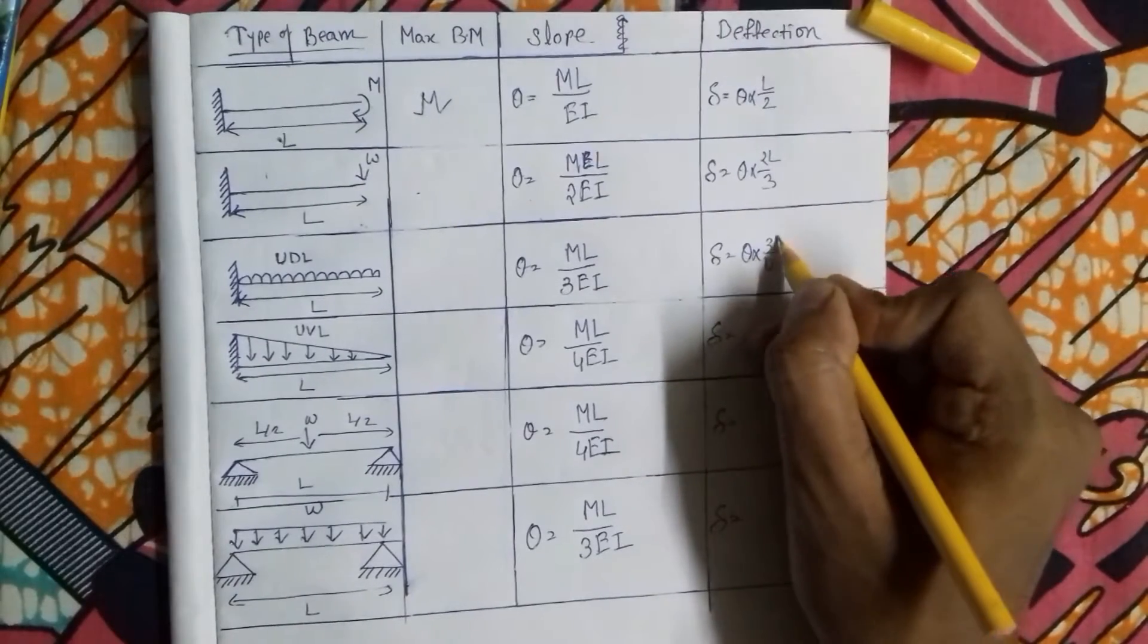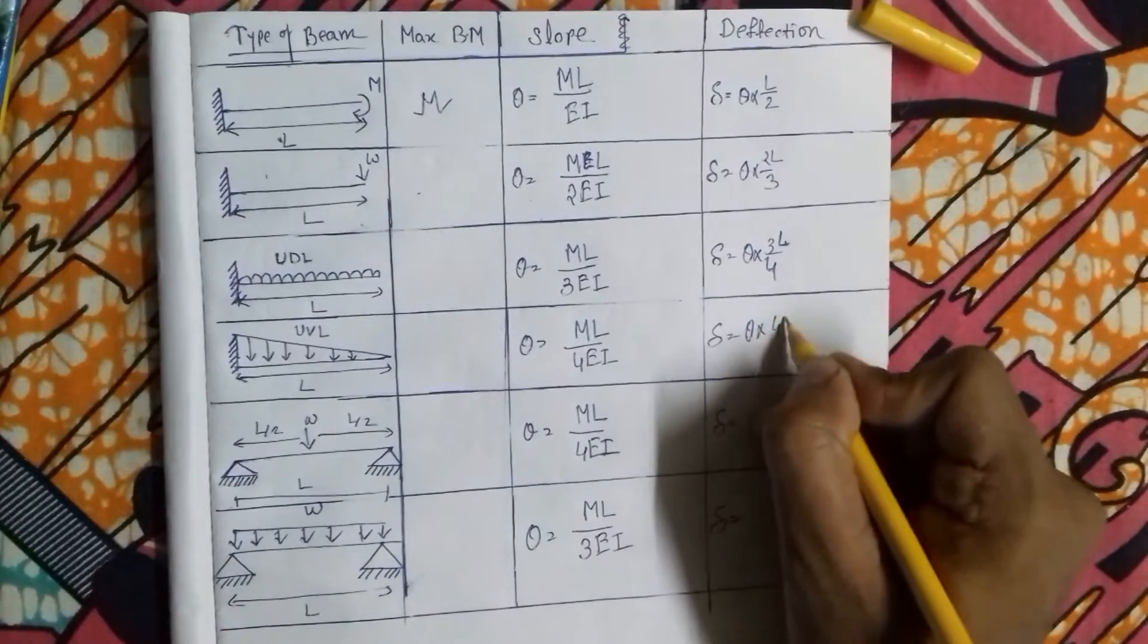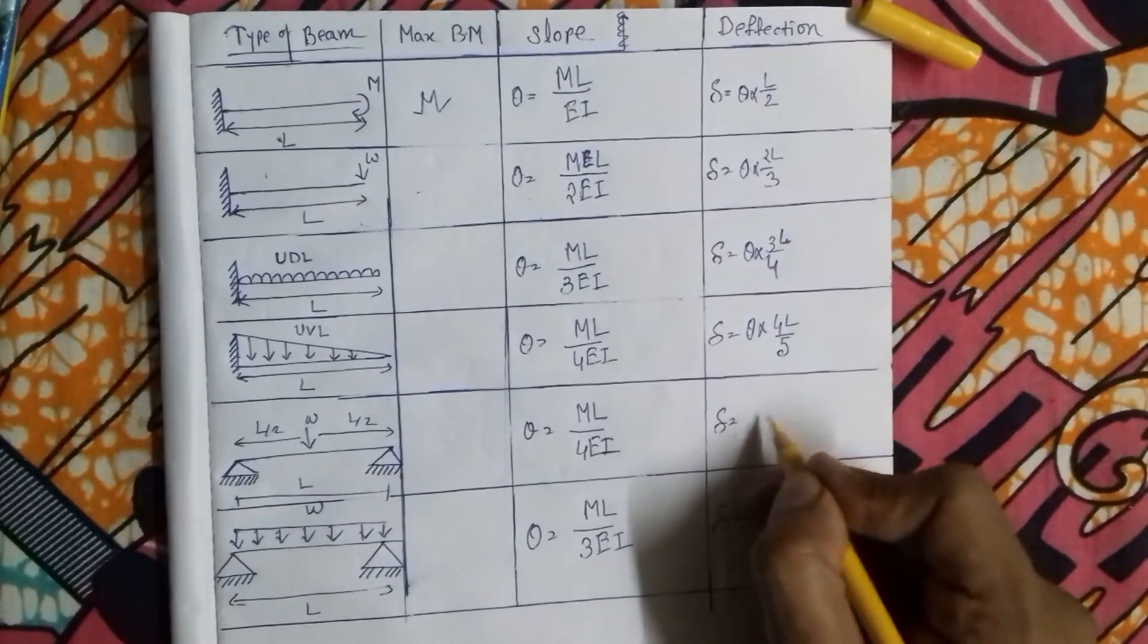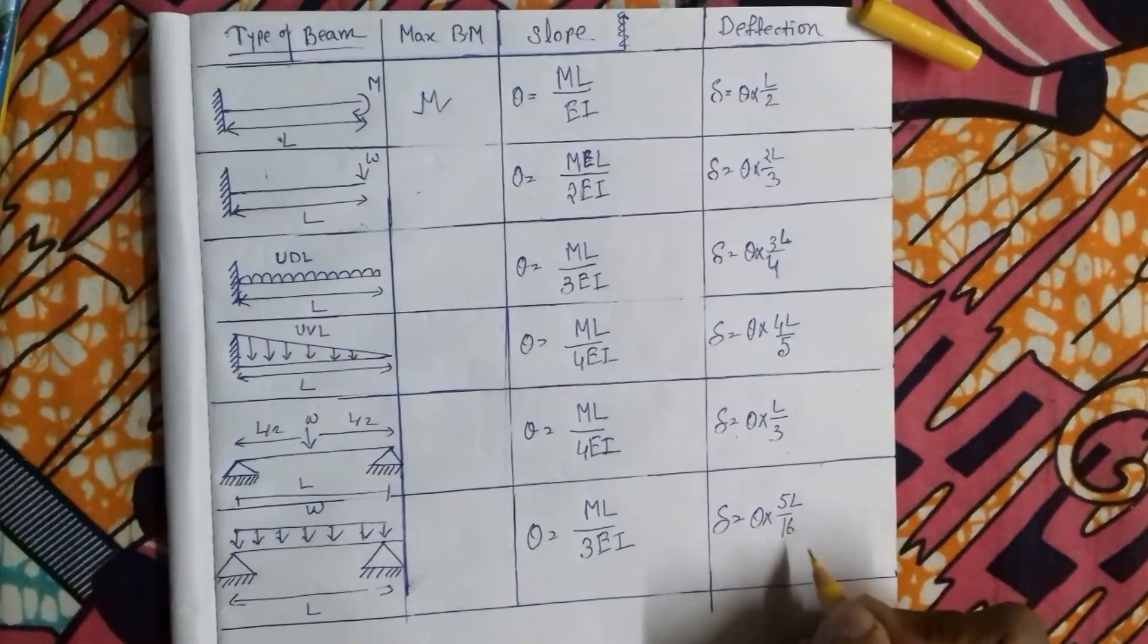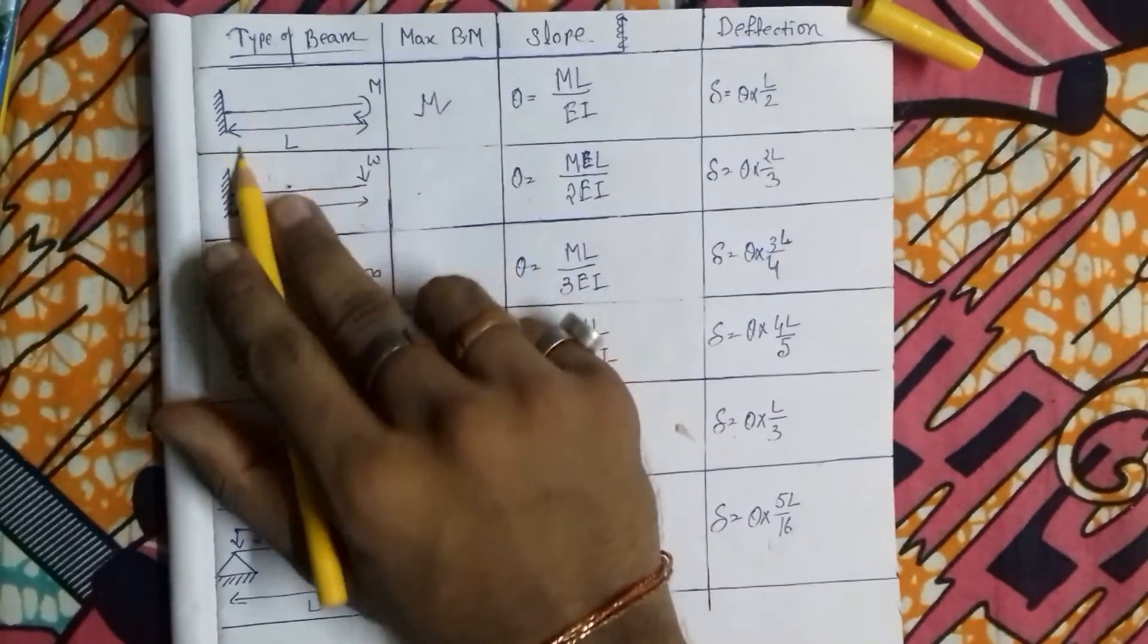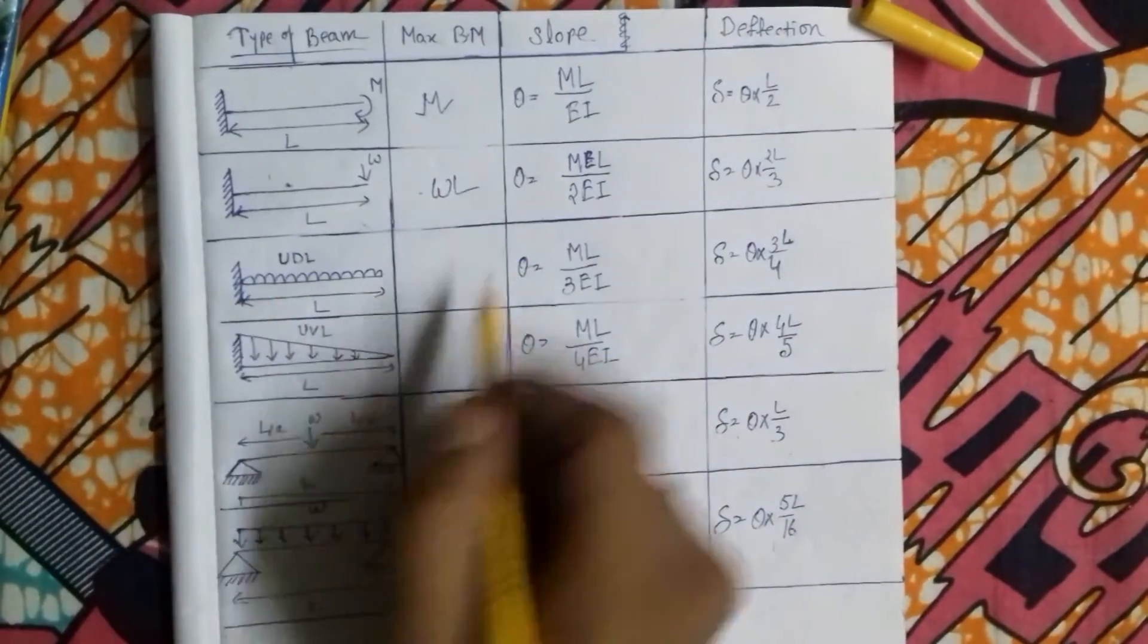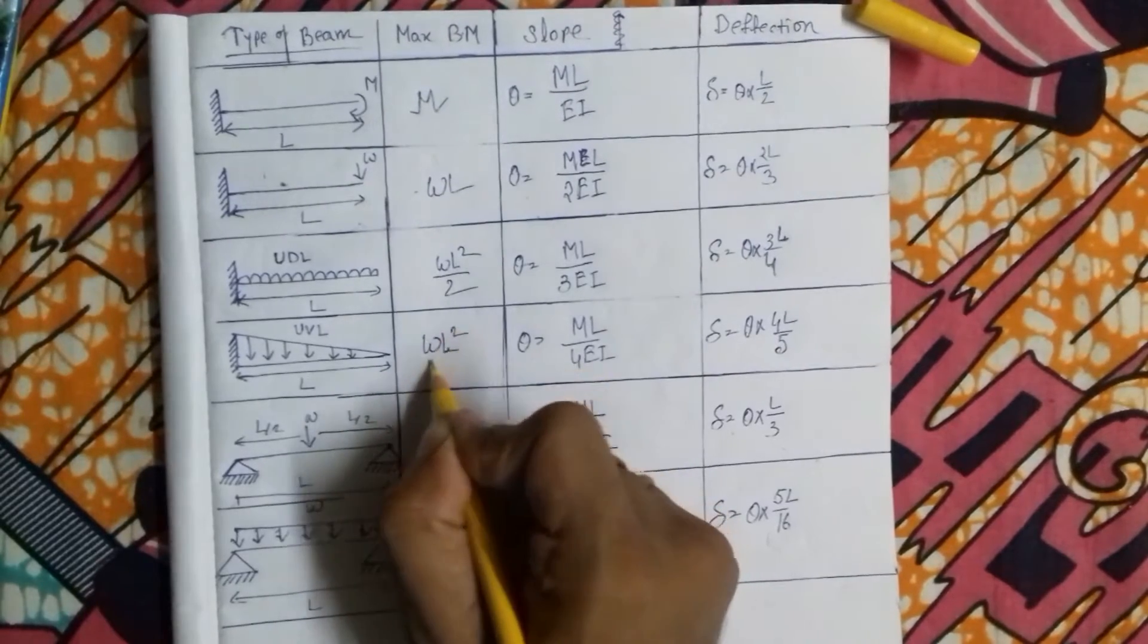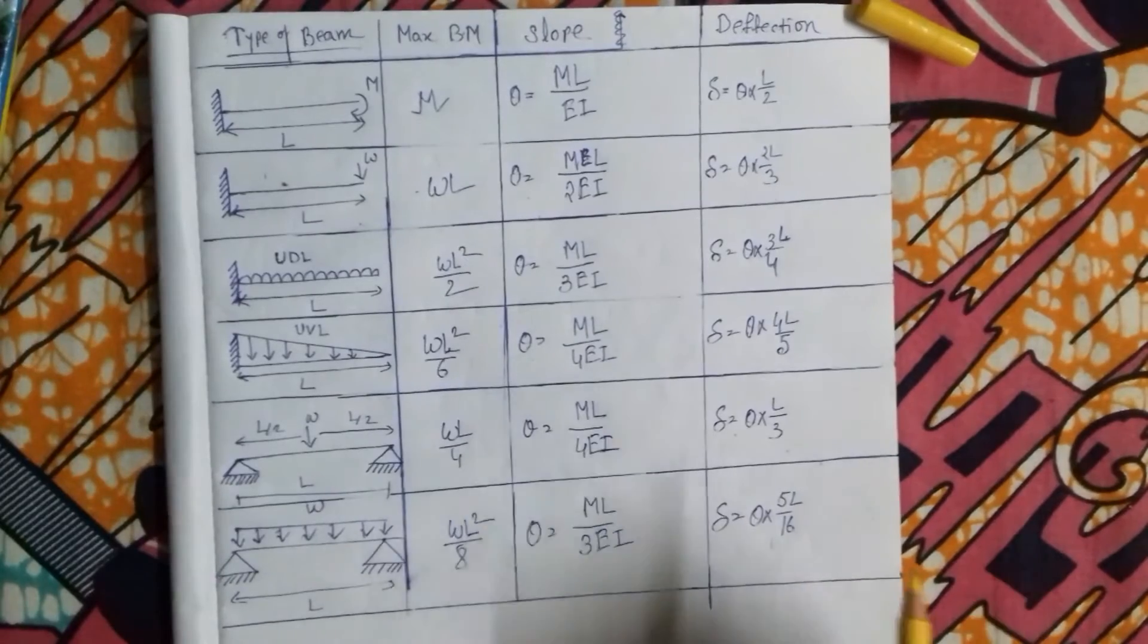ML by 4EI, and this method here is change. The values are WL² by 6, WL by 4, WL² by 8.